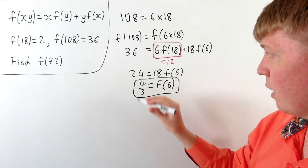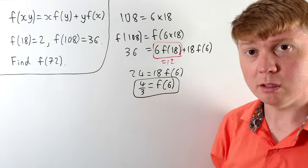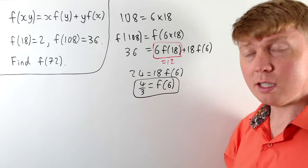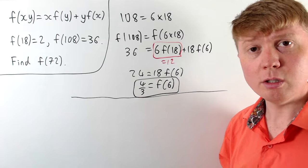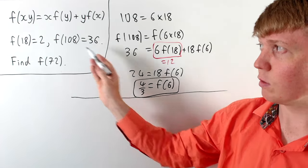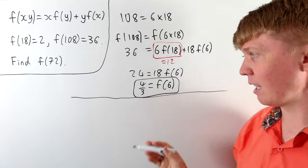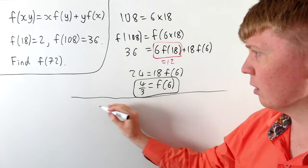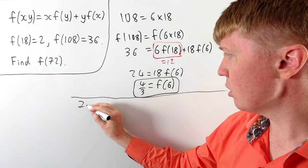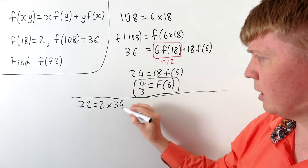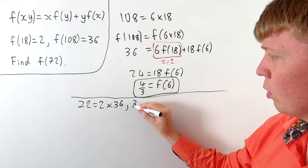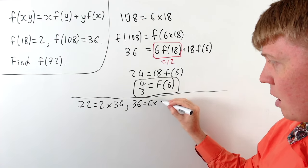So we've managed to find the value of f at 6, but we need to find the value at 72. And this now becomes a matter of trying to work out how can we make 72 using multiplication or division from these numbers that we've started with, our 18, 108, and now we've got 6 as well. So we can think of this as 72 is 2 times 36, which we don't have either of these numbers yet, but we know that 36 can be made as 6 times 6.